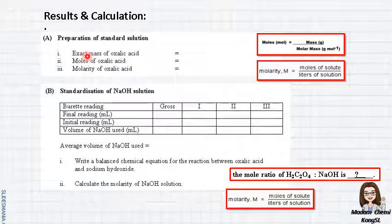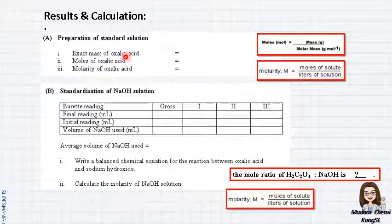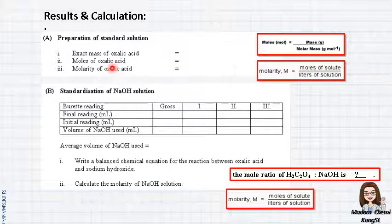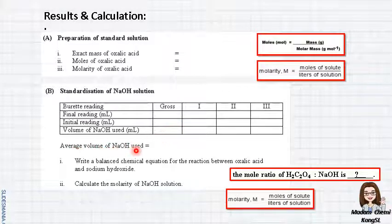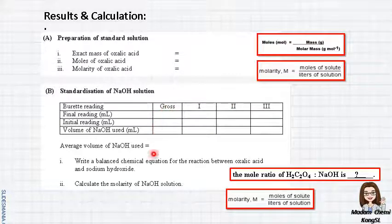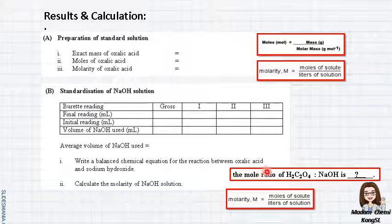Now we go to the results and calculation part. This is the table — we need to write down all the results: the mass of oxalic acid, and then calculate the moles of oxalic acid based on the formula. For Part B, jot down all the initial and final readings to find the volume of sodium hydroxide used. Take readings from set 1, set 2, and set 3 — ignore the gross reading. Then write the balanced chemical equation for the reaction between oxalic acid and sodium hydroxide, and from the mole ratio, calculate the molarity of sodium hydroxide.